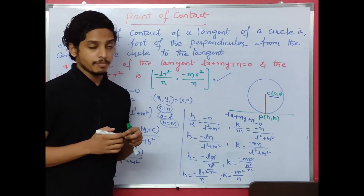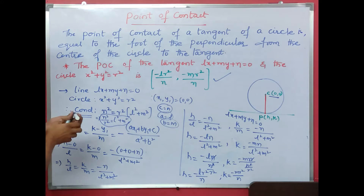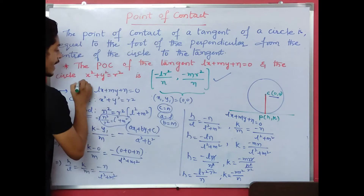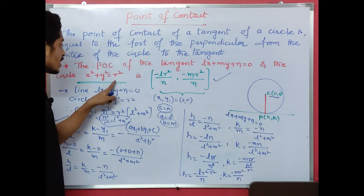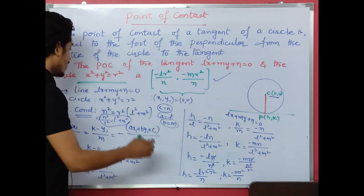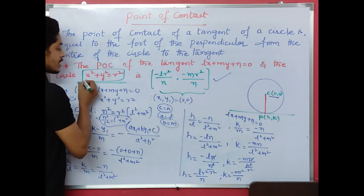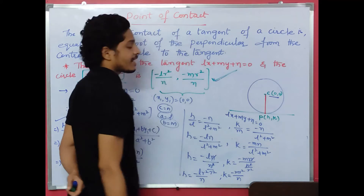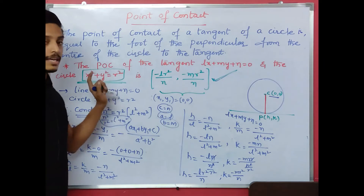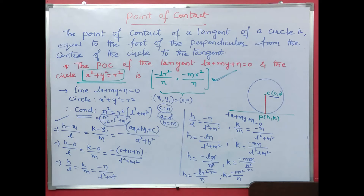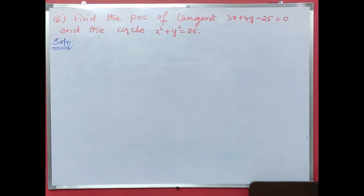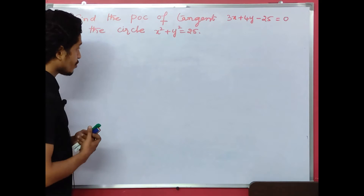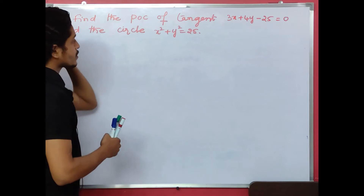This formula for point of contact is very important. So, the point of contact for x squared plus y squared equals r squared is derived. Now let's look at a particular problem.